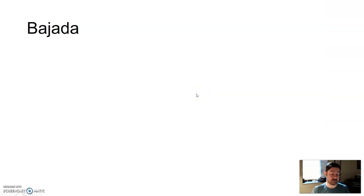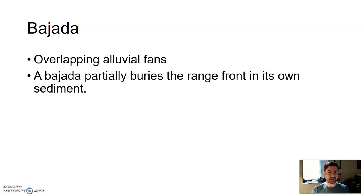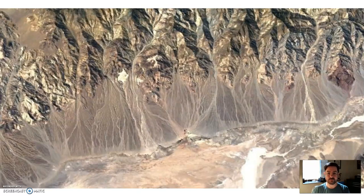A bajada uses alluvial fans, but a bajada is an area of overlapping alluvial fans. There's so many streams coming out of the mountains that they're all creating these alluvial fans when they hit the valley floor and they all start to overlap. So they create this overlapped area as you get to the mountain range. You can see the overlapping alluvial fans, but it kind of partially buries that front range of the mountains. The sediment here is deposited due to water.